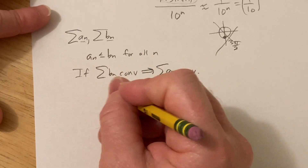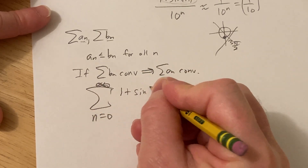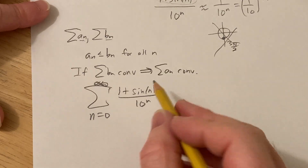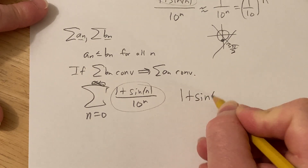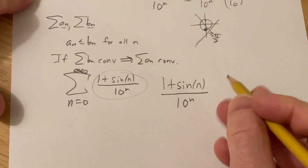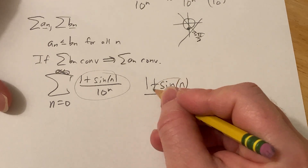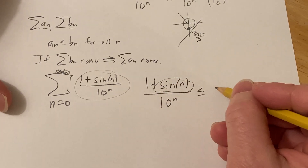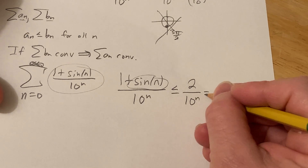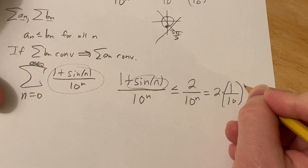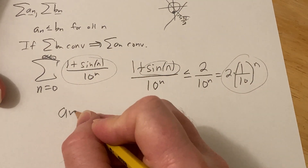So we have a_n = (1 + sin(n)) / 10^n. These are our a's in the direct comparison test. When trying to show convergence, you want to show that a_n is less than or equal to the b's, where the sum of the b's converges. Since sine is at most 1, the numerator is at most 2, so (1 + sin(n)) / 10^n ≤ 2 / 10^n = 2 × (1/10)^n, which is our b_n.